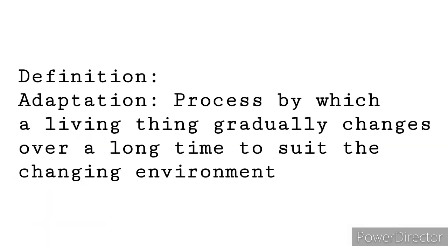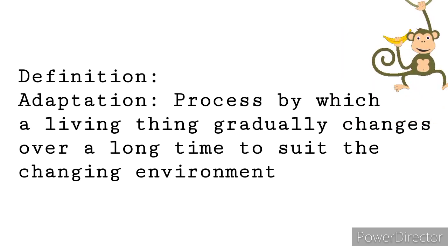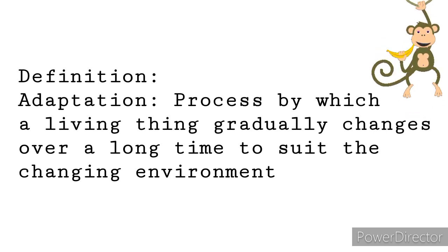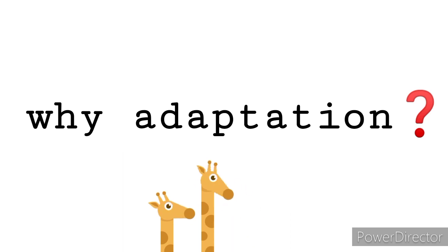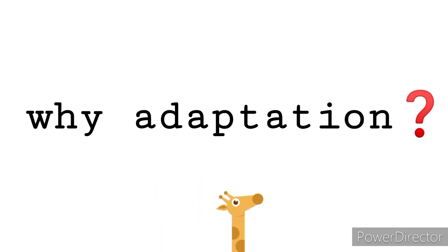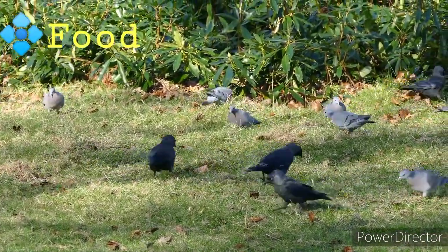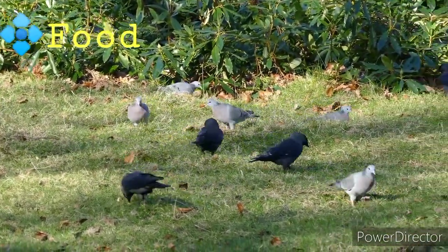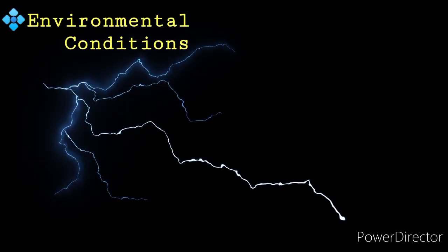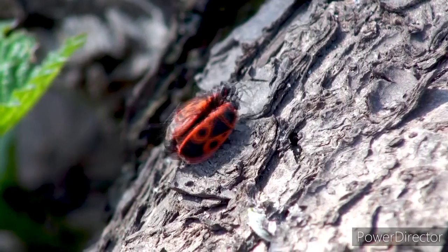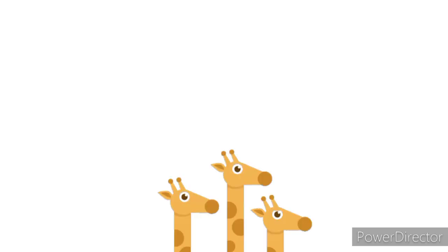We can define adaptation as the process by which a living thing gradually changes over a long time to suit the changing environment. Now let's look at why organisms adapt in their habitats: to find or make food from available resources, to protect themselves from predators, to protect themselves from the environment, and to find favorable conditions for reproduction.